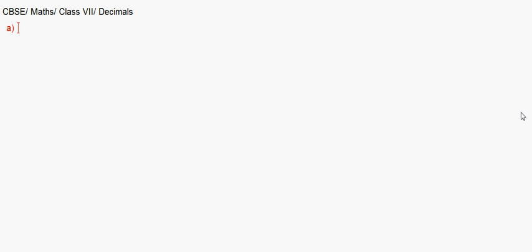The first topic is division by 10 or a power of 10 — that means dividing a whole number or a decimal number by 10 or a power of 10. In such cases, the decimal point moves to the left. In the previous video session we learned how the decimal moves to the right when multiplying; here we learn how it moves to the left when dividing.